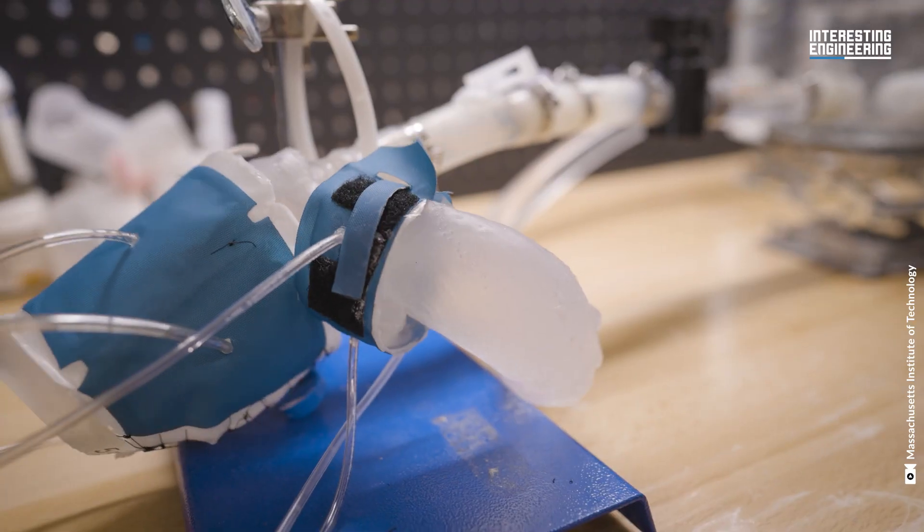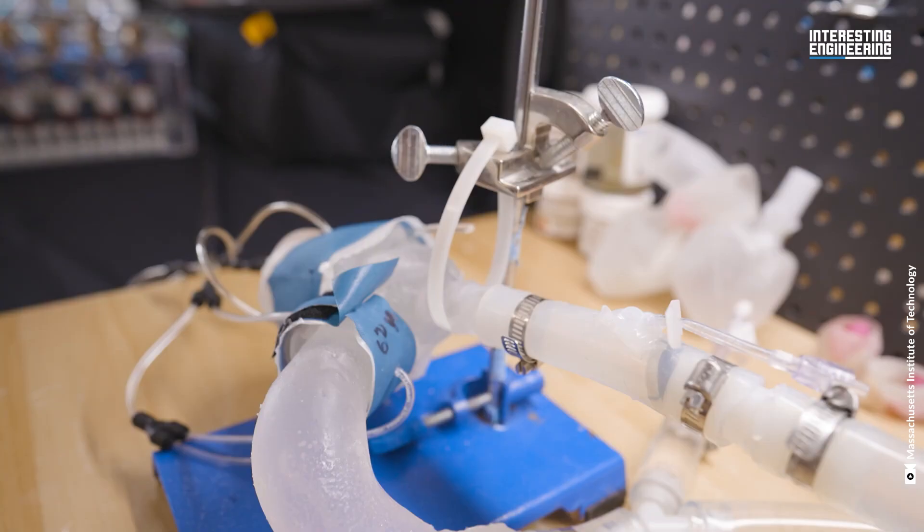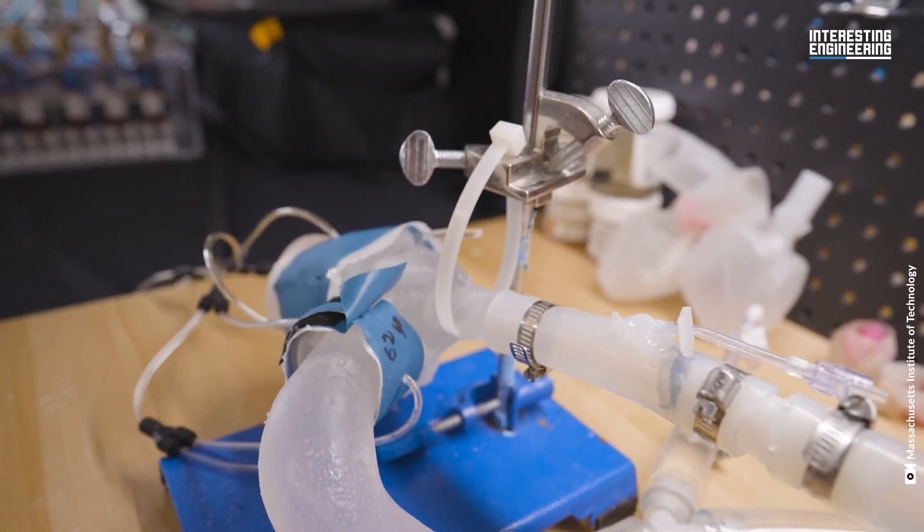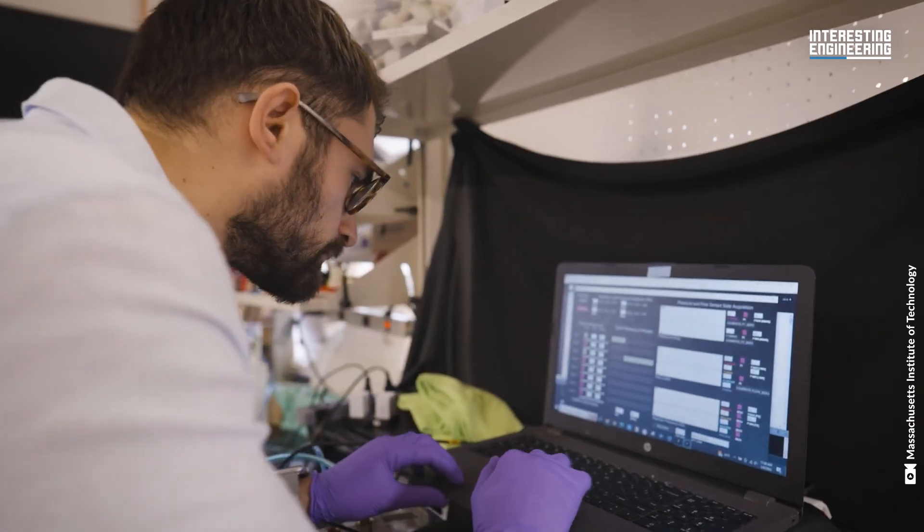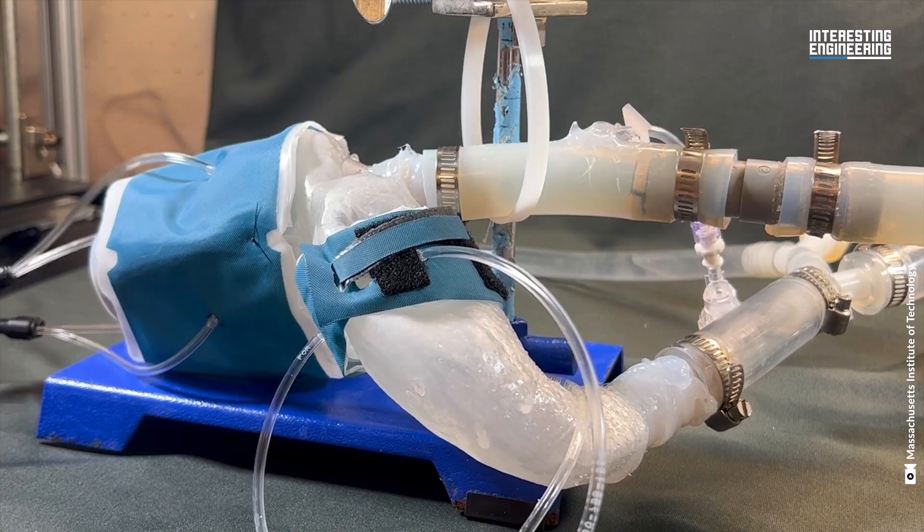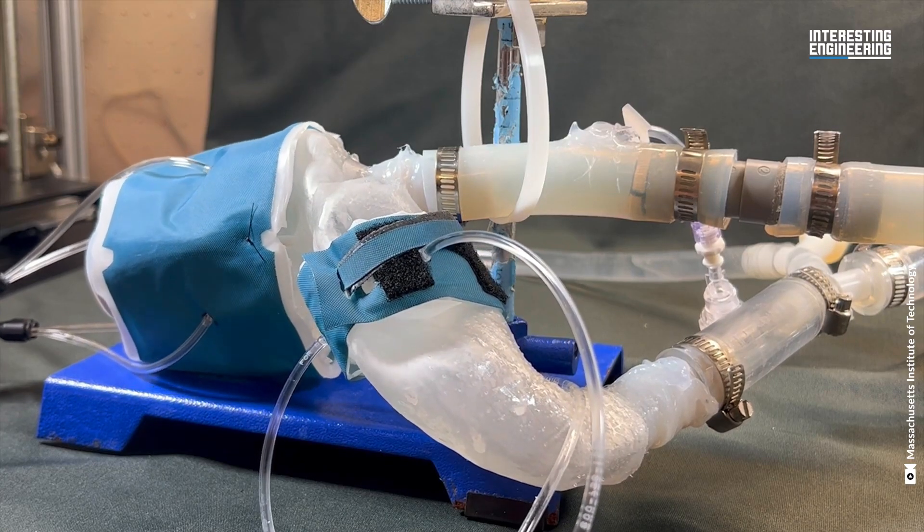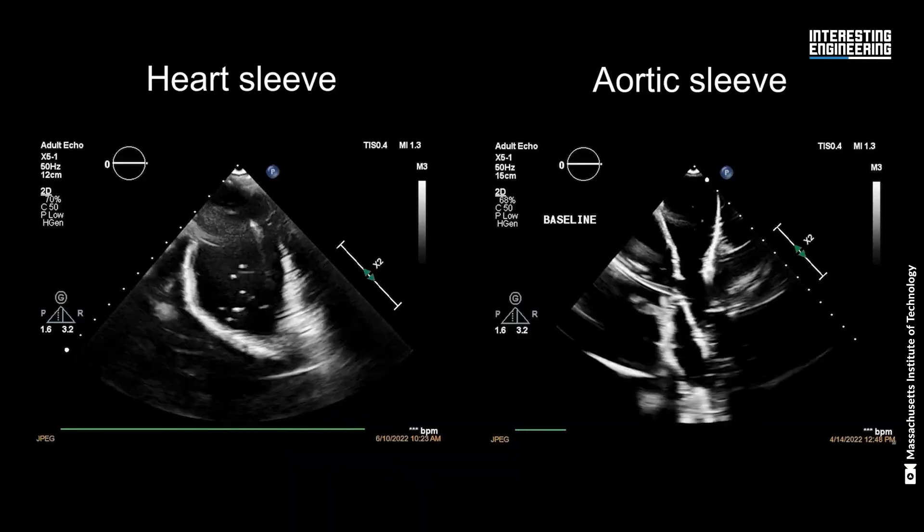To simulate the heart's pumping action, the team designed sleeves akin to blood pressure cuffs. When connected to a pneumatic system, these sleeves can be rhythmically inflated, causing the heart replica to contract, mimicking the genuine heart's pumping action.